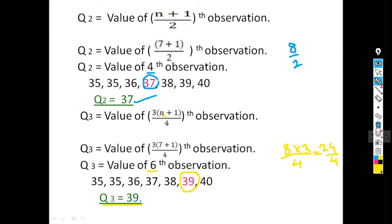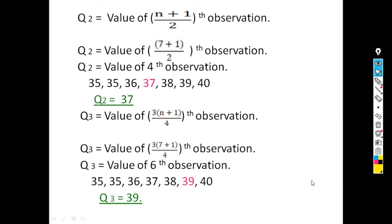In this way, if n is odd, we can calculate Q1, Q2, and Q3 — that is, the lower quartile, median, and upper quartile.